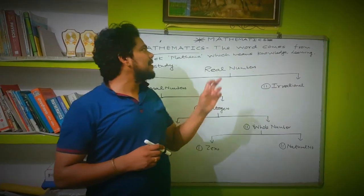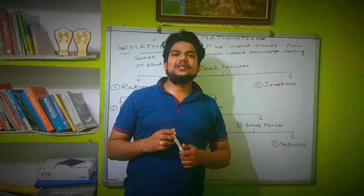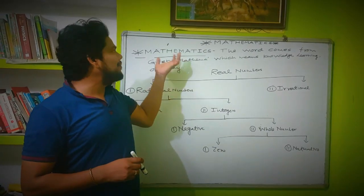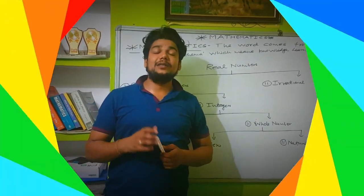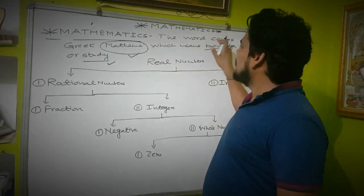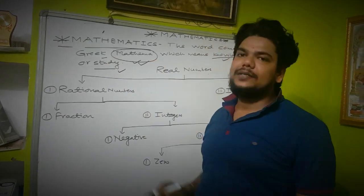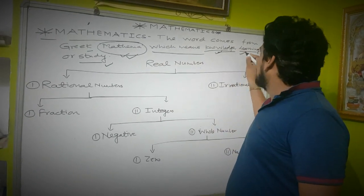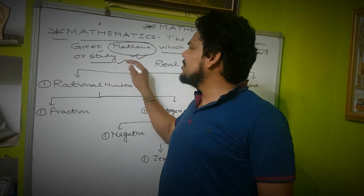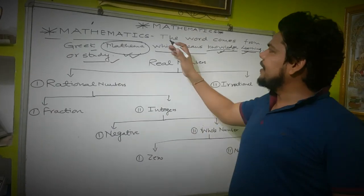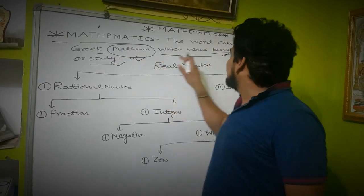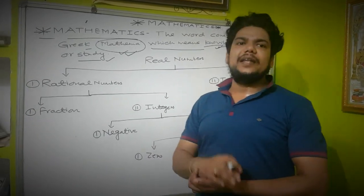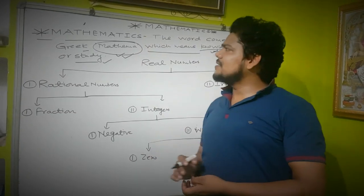Real numbers that we discuss before — real numbers. Introduction to Mathematics. The word 'Mathematics' comes from the Greek word 'Mathema,' which means knowledge, learning, and study. If we define it, we can see mathematics is about how to study.